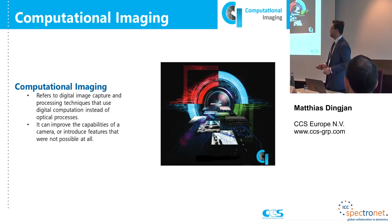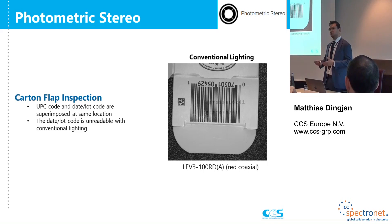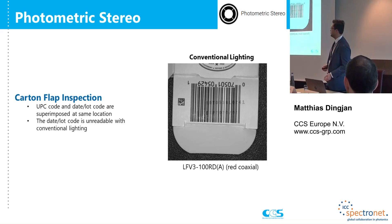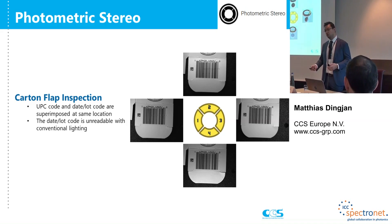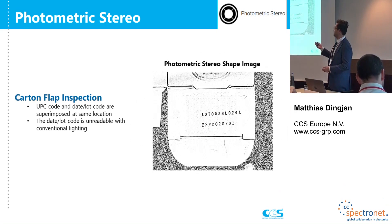Applying this to machine vision, we can use photometric stereo or shape-from-shading. Photometric stereo is a technique where you take four different pictures with four different illumination angles and extract depth and surface information from those images. As an example: a carton flap has a barcode printed on top and a lot code underneath, but you cannot really see the lot code because the barcode is in the way and also absorbs IR. With photometric stereo we take pictures from north, east, south, and west, observe the different shadows cast, and by combining those four images the barcode disappears while the lot code becomes clearly visible.